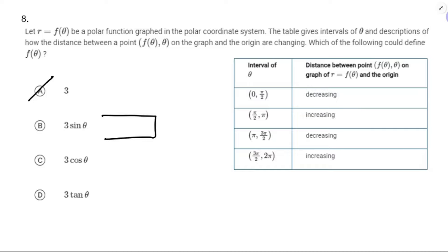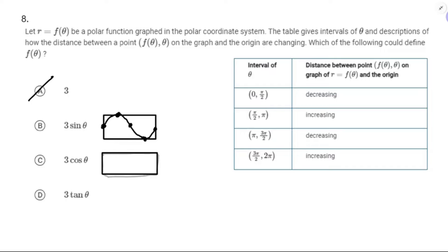r = 3 sin θ — I'm going to draw a quick rectangular graph of that. Zero to 2π. And while I'm at it, I want to talk about answer choice D: r = 3 tan θ. We have not really graphed r = tan θ at all in our study of polar functions, because of those vertical asymptotes on the graph of y = tan x. It's pretty misbehaved.